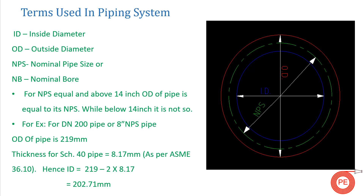Let's see what the different terms are used in a piping system. The first term is ID — the inside diameter of the pipe, shown here in blue. Next is OD — the outside diameter of the pipe. The third and most important term is nominal pipe size. Nominal pipe size is an imaginary line drawn between the outside diameter and inside diameter of the pipe. This term does not physically exist during pipe manufacturing; it is an imaginary representation between OD and ID.